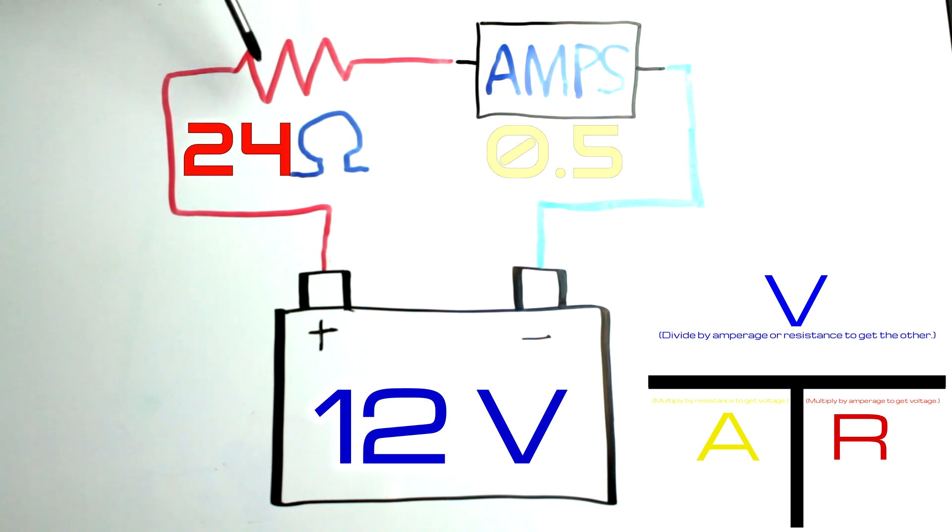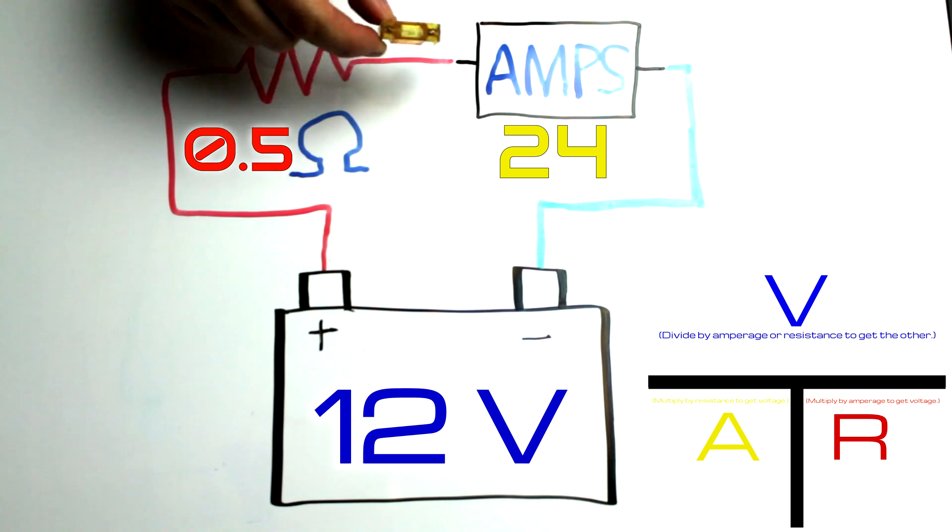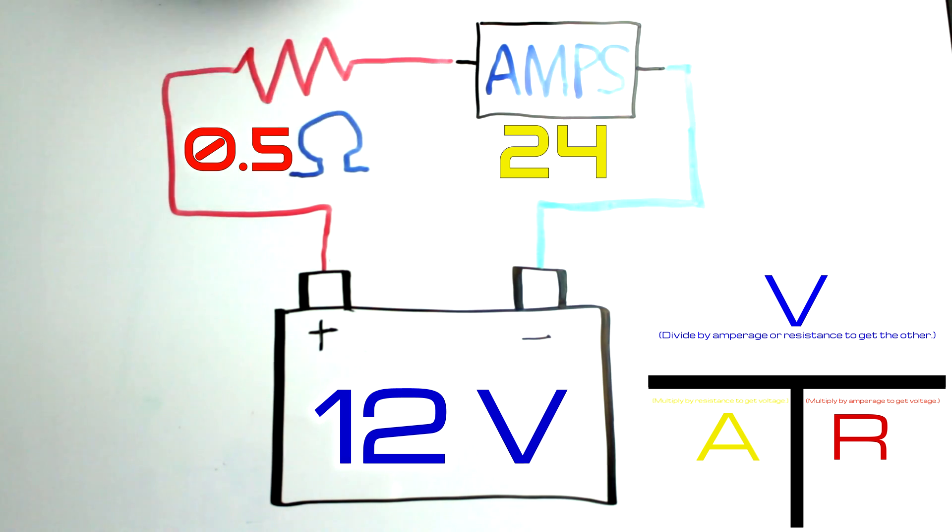And one last one, what if we had a really low resistance here, 0.5 ohms. Well 12 volts comes along and hardly anything is holding it back so it's gonna flow right through there real fast. That'll be 24 amps of current flow to be precise. If you had a 20 amp fuse on your circuit right there that would blow it out.